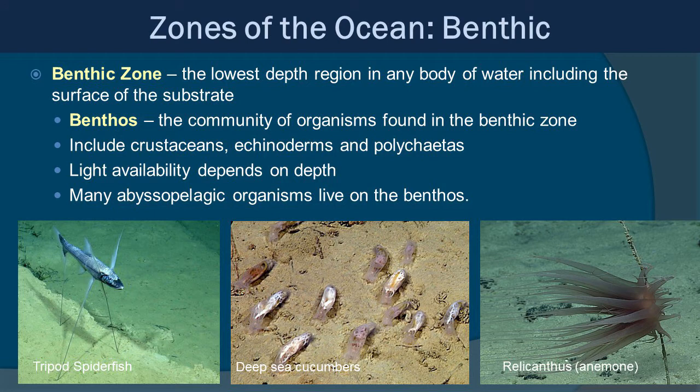Here we are at the bottom — the benthic zone, the lowest depth or region in any body of water, including the surface of the substrate itself. The term benthos refers to the community of organisms found in the benthic zone, including crustaceans, echinoderms, polychaetes, and even fish. Light availability depends on depth: if the benthic zone is at mesopelagic or epipelagic depth, there will be light; if at bathypelagic or abyssal pelagic depth, there will be no light.